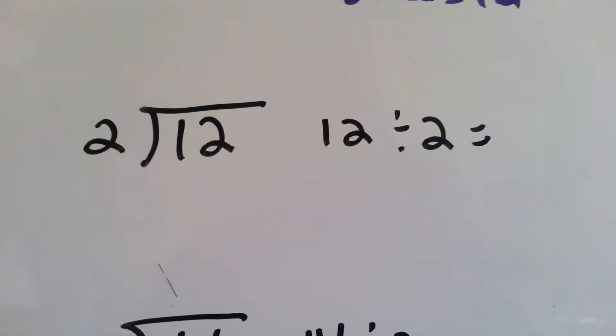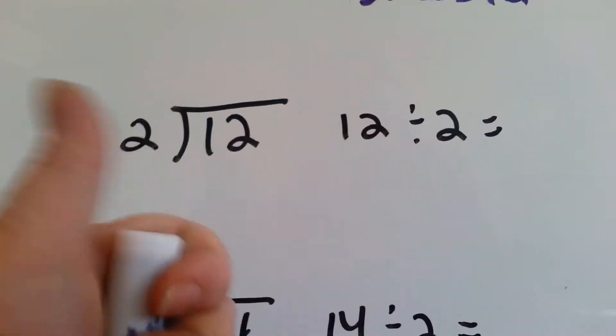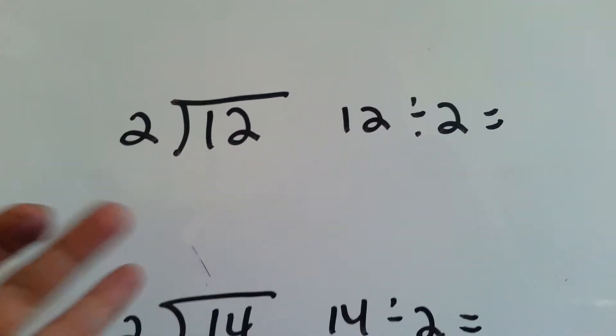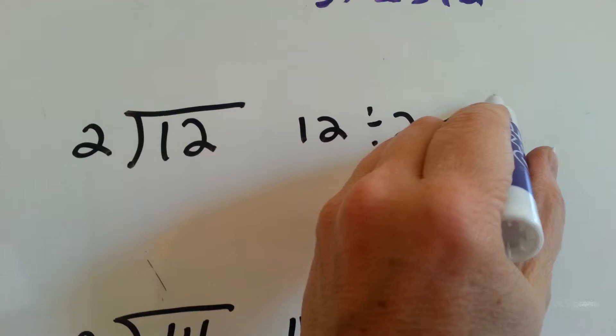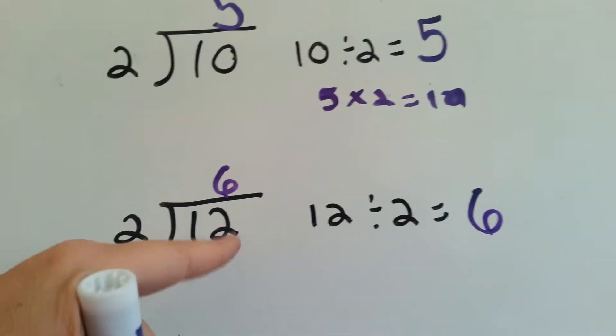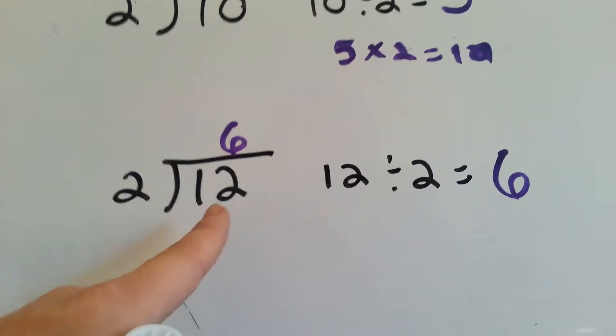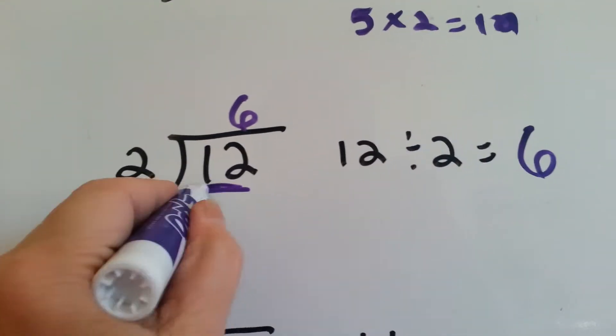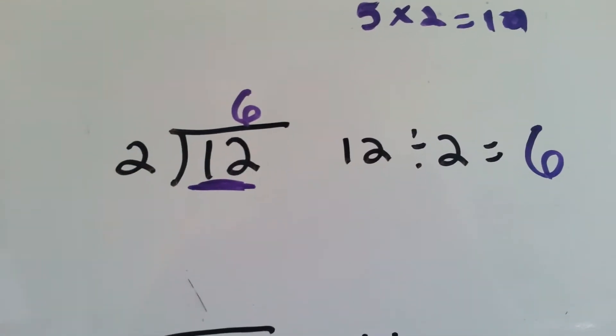12 divided by 2. Let's count by 2's. 2, 4, 6, 8, 10, 12. 6. And again, like the one up here, we're going to put the answer above the 2 to let everyone know that we use the entire number 12. Okay?